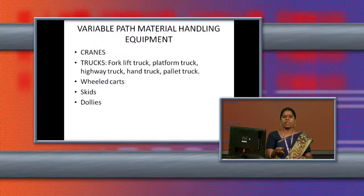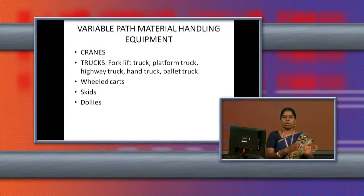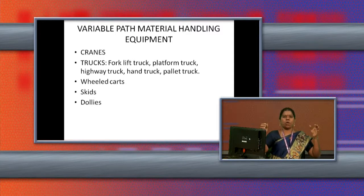The next variable path equipment is the dolly. We may see dollies in hill stations where old-age people who cannot climb hills are carried on dollies on shoulders. Similarly, in an organization, dollies are used to carry materials from one place to another.